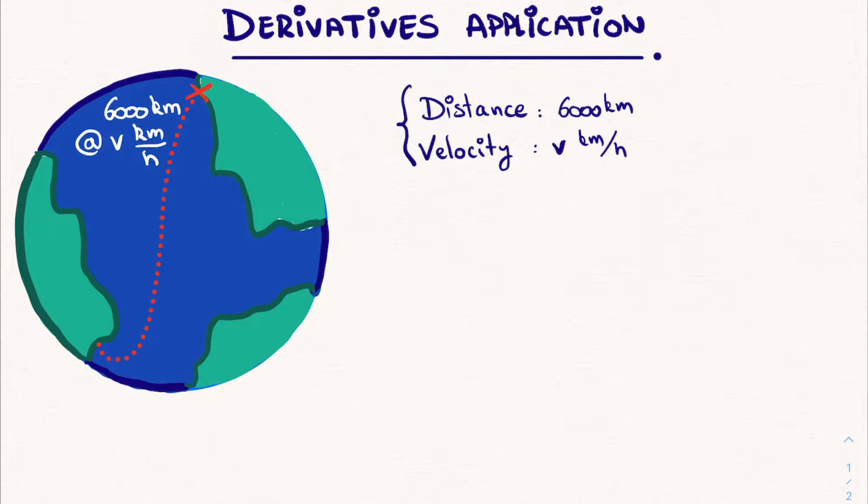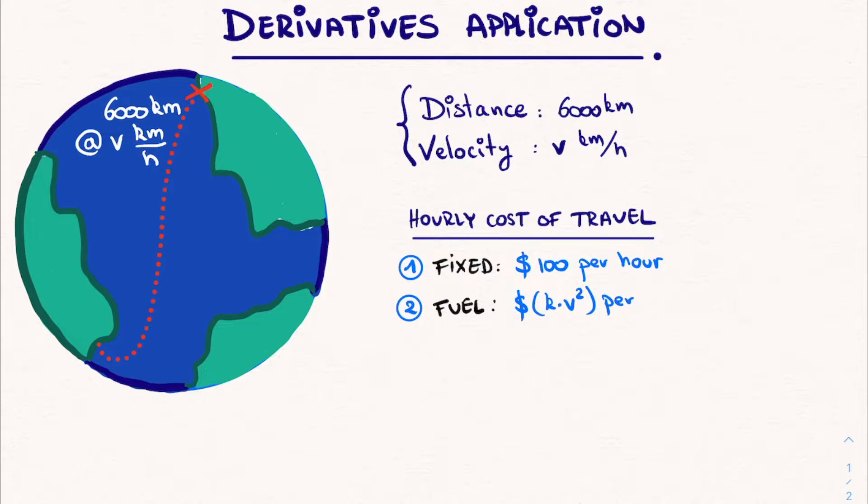Of course, as we all know, shipping goods from one place to another costs money. In fact, there is an hourly cost of travel associated with shipping goods over the ocean. First there is a fixed component of $100 per hour of travel. The second component is the cost for the fuel. And for one hour of travel, this costs K times V squared dollars. Now this K is just a constant, which we will leave unspecified at this point. And this V is clearly the velocity at which we are traveling.